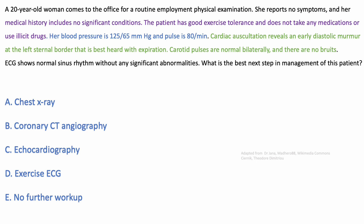The last two lines say carotid pulses are normal bilaterally and there are no bruits, which excludes carotid atherosclerosis. EKG shows normal sinus rhythm, no abnormalities. What is the best next step? From the answer choices, these are all investigations — whether we do them or not depends on the case. So far she has no problem with EKG nor atherosclerosis.